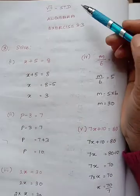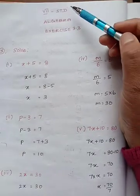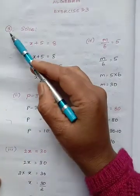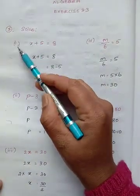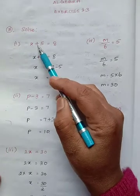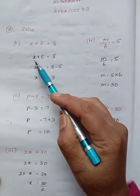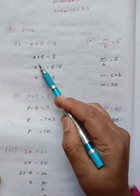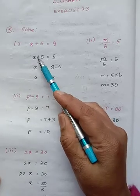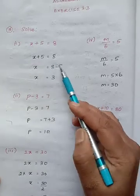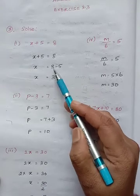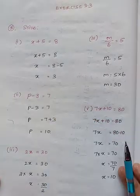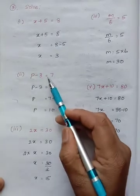Hi children, today we are going to learn 7th standard algebra exercise 3.3. Third sum, solve roman letter 1: x plus 5 equals 8. Our aim is to find the value of x. The nearby value plus 5, when taken to the other side, becomes minus 5. So 8 minus 5 equals 3, and x equals 3.